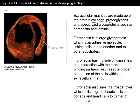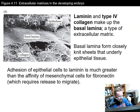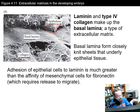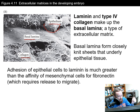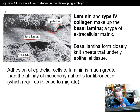Laminin and collagen make up the basal lamina, one type of extracellular matrix. The basal lamina forms closely knit sheets underneath epithelial tissue — like a baseboard. Adhesion of epithelial cells to laminin is greater than the affinity of mesenchymal cells for fibronectin, because mesenchymal cells connected to fibronectin need to be released and able to migrate, and so they can't be as tightly bound as the more stationary epithelial cells.